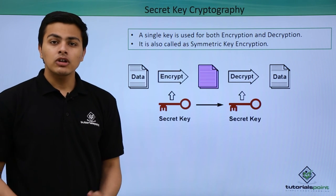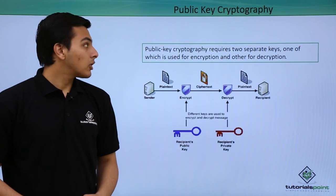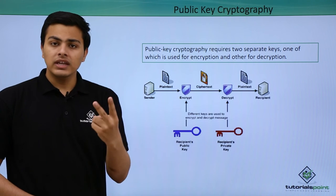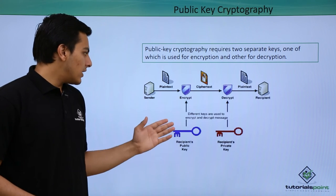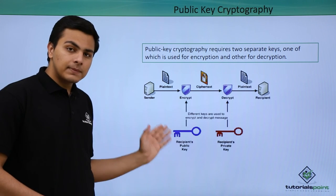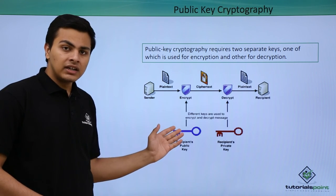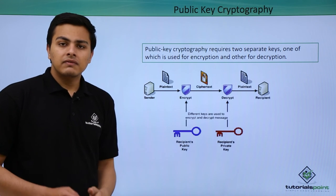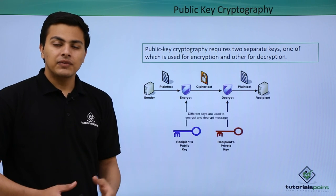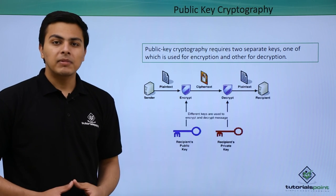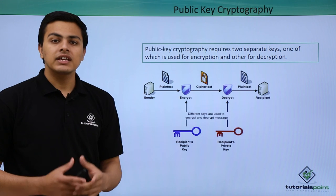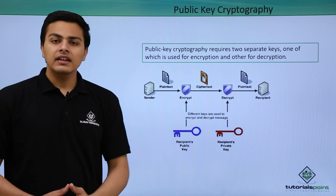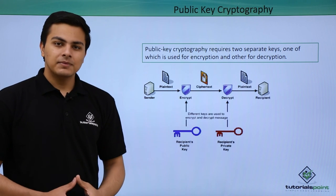Now let's talk about public key cryptography. In public key cryptography there are two keys — the key used for encryption is different from the key used for decryption. That is why public key cryptography is also called asymmetric encryption.